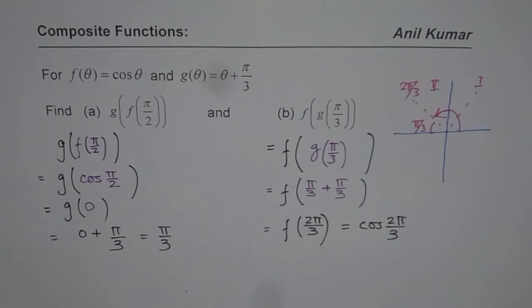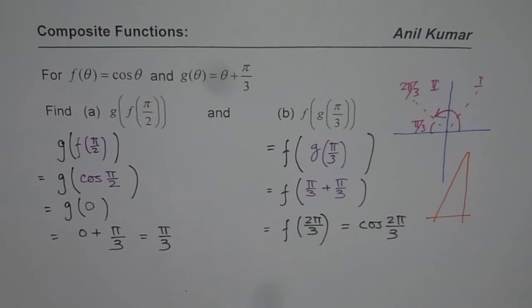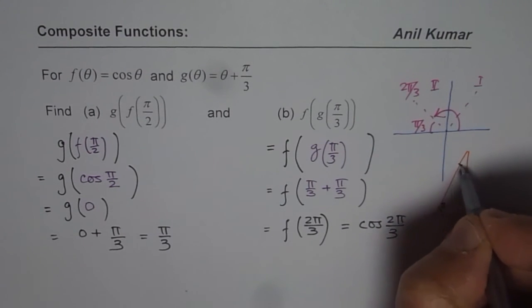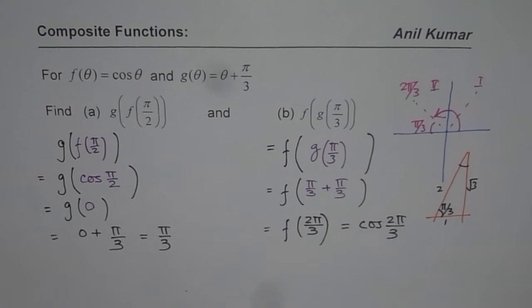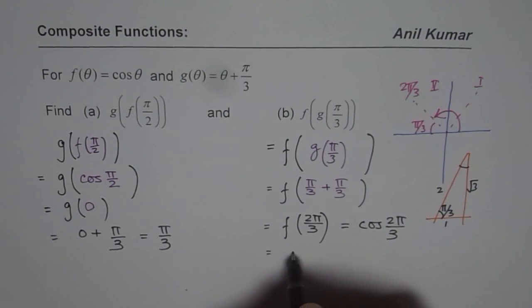Let me also make a standard special triangle which is the π/3 triangle. We have an acute angle of π/3, and in this triangle, the sides are 1, 2, and √3. So we can now write down our answer as cos(2π/3) will be negative since we are in quadrant 2.